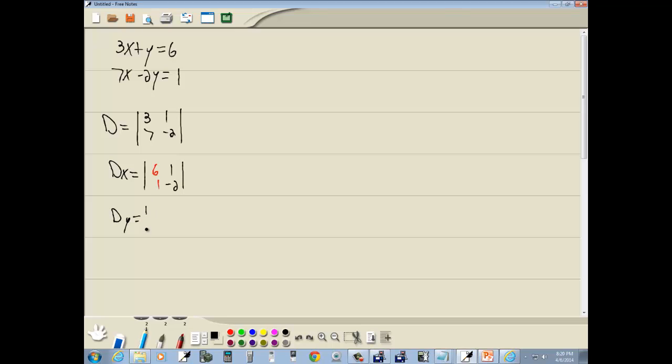Now my D sub y, I'm going to go through and replace my y column in D with the numbers on the right side. So I do 6 and 1 here and then this first column remains as is, this is 3, 7.